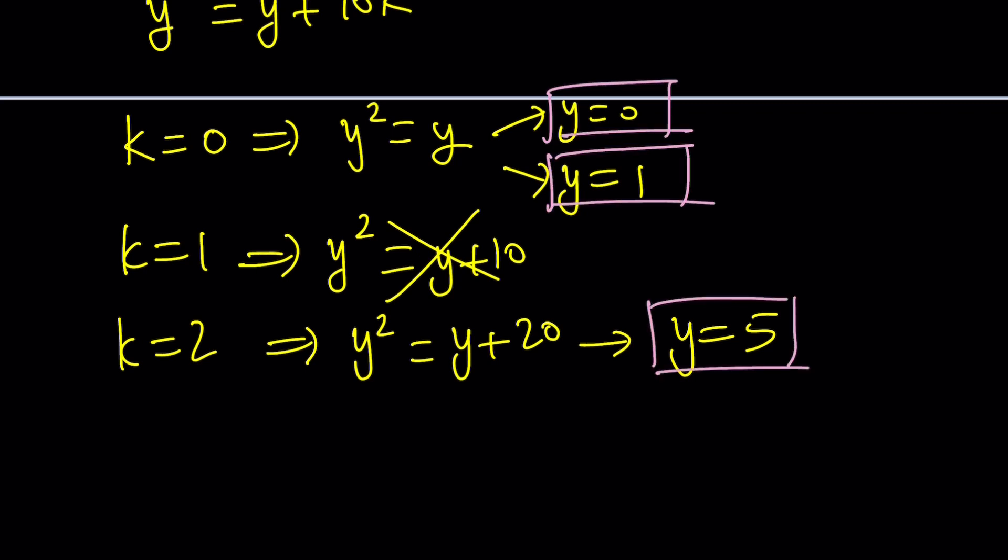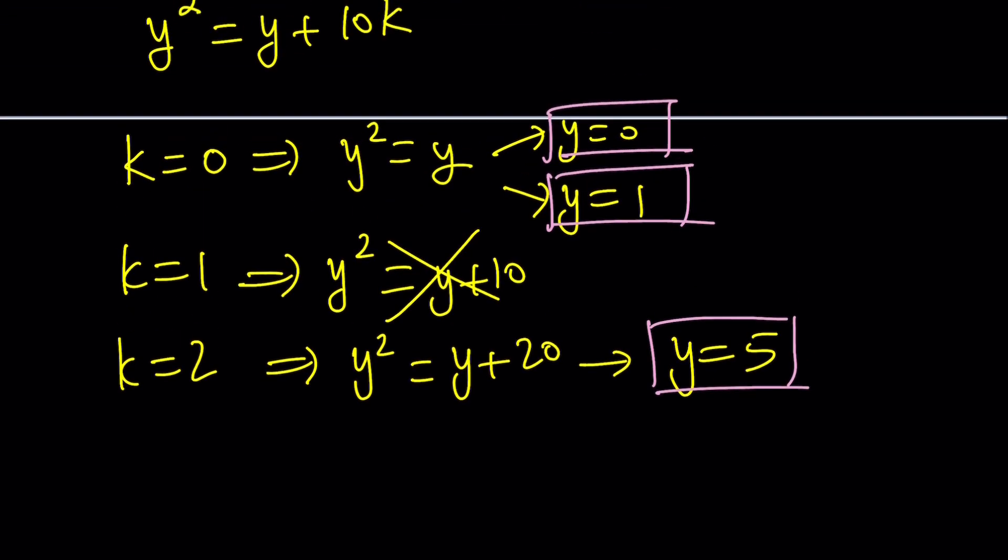Do you think there are more solutions? That's another million-dollar question. But if you continue, for example, if k is equal to 3, then you're going to get y squared equals y plus 30, y plus 40, so on and so forth. You're going to realize there are no other digits that satisfy this type of equation. So we only have three possibilities.